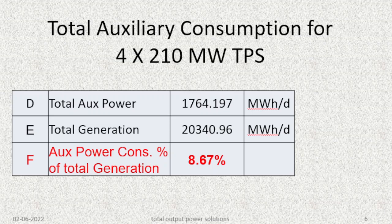The total auxiliary consumption for the whole 4 x 210 MW thermal power station was 1764.197 MWh per day. If all sets run at 210 MW, the total generation would be 20,340.96 MWh per day. The auxiliary consumption works out to approximately 8.67% of total generation.